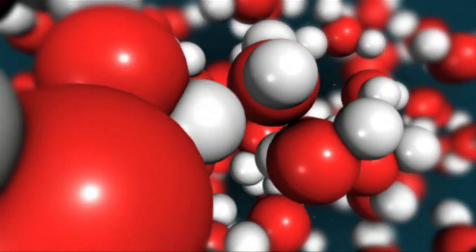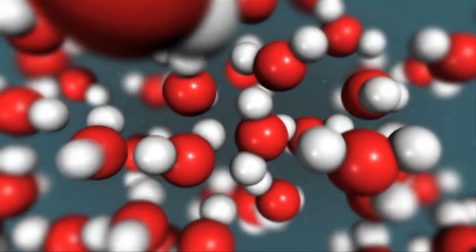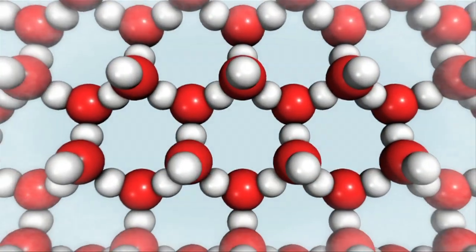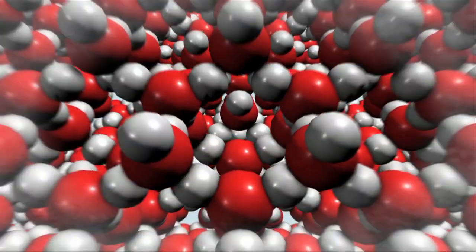As water freezes, each molecule is forced to crystallize in a formation where it makes four hydrogen bonds. The resulting lattice is less dense than liquid water, which is why ice floats.